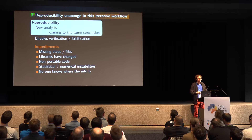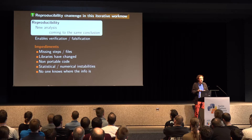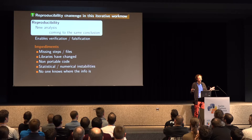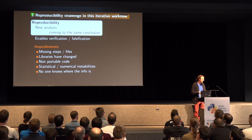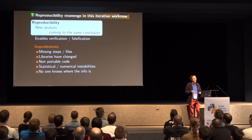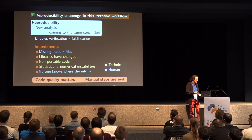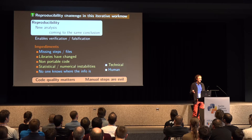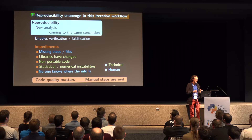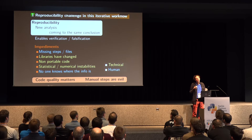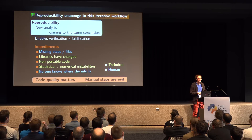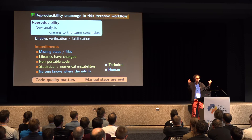If you look at the problems — the impediments — quite often we find missing steps or missing files, libraries that have changed, code that's not portable, numerical instabilities, and ultimately nobody knows where the information is. There's a mixture of technical and human problems, and two general messages: code quality really matters, and manual steps are evil. Many sysadmins try to encode every step in some framework to avoid any manual work.